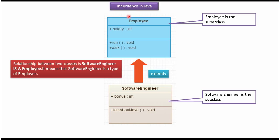In this video tutorial I will cover an inheritance example. Here you can see the Employee class — it has one property called salary and two behaviors: run and walk. The SoftwareEngineer class has one property called bonus and one behavior called talk about Java, and this SoftwareEngineer class extends the Employee class.